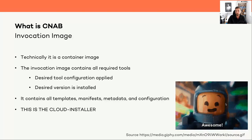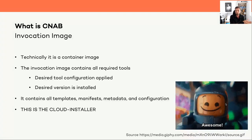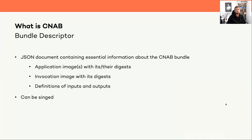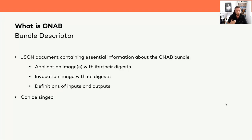The invocation image is what simplifies the process of bringing a piece of software with all its dependencies and infrastructure to a certain environment. The last part of a CNAB bundle is the bundle descriptor — a JSON document that holds basic information about the bundle like name and description, information about inputs that can be provided upon installing, and outputs. For example, if you deploy an app to Azure App Service, a potential output could be the fully qualified domain name. The bundle descriptor can also be signed.